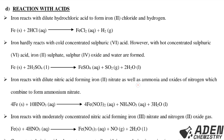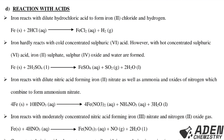Iron reacts with dilute nitric acid forming iron(II) nitrate, ammonia, and oxides of nitrogen which combine to form ammonium nitrate. The equation is: 4Fe(s) + 10HNO3(dilute) → 4Fe(NO3)2(aq) + NH4NO3(aq) + 3H2O(l).